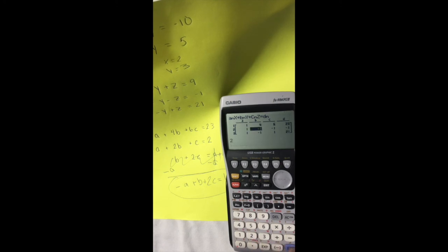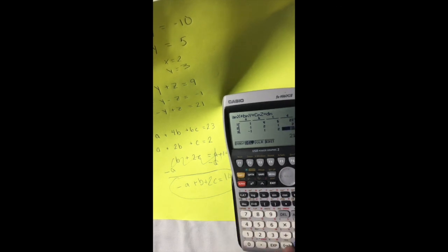Then we have 1a, 2b, 1c, and it's equal to 2. And finally, we have negative a, because we moved it over, B is just 1, 2c, and it's equal to 14.